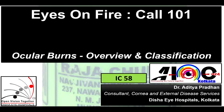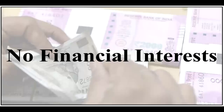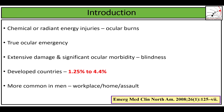My talk will be an overview of ocular burns and their classification. An ocular burn is basically any insult to the ocular surface via chemical or radiant injury. It is definitely an ocular emergency where treatment has to be started before examination. It can lead to extensive damage, significant ophthalmic morbidity, and blindness.